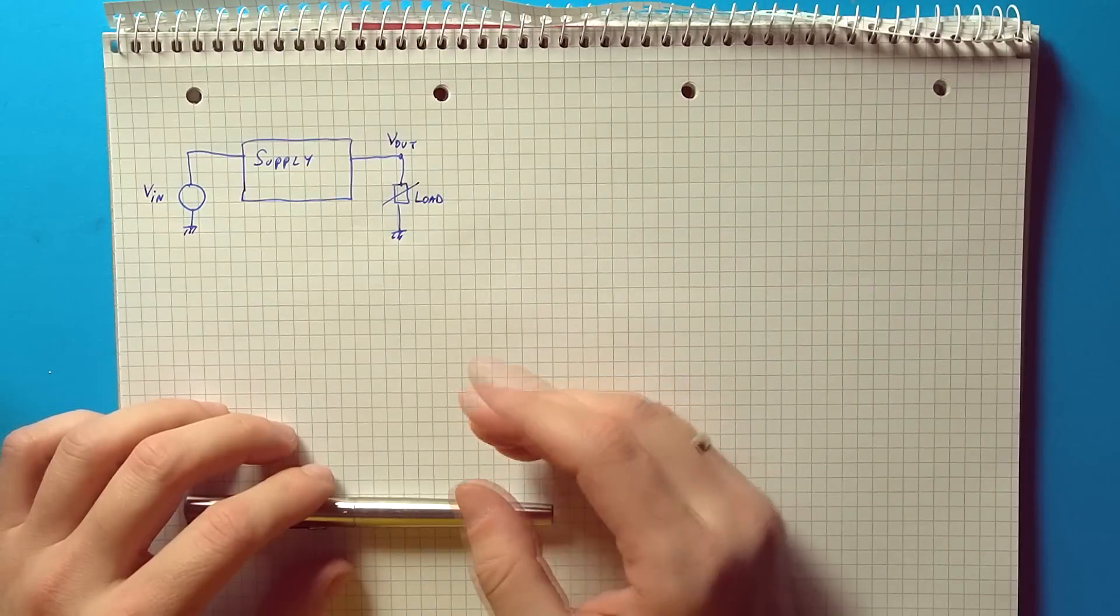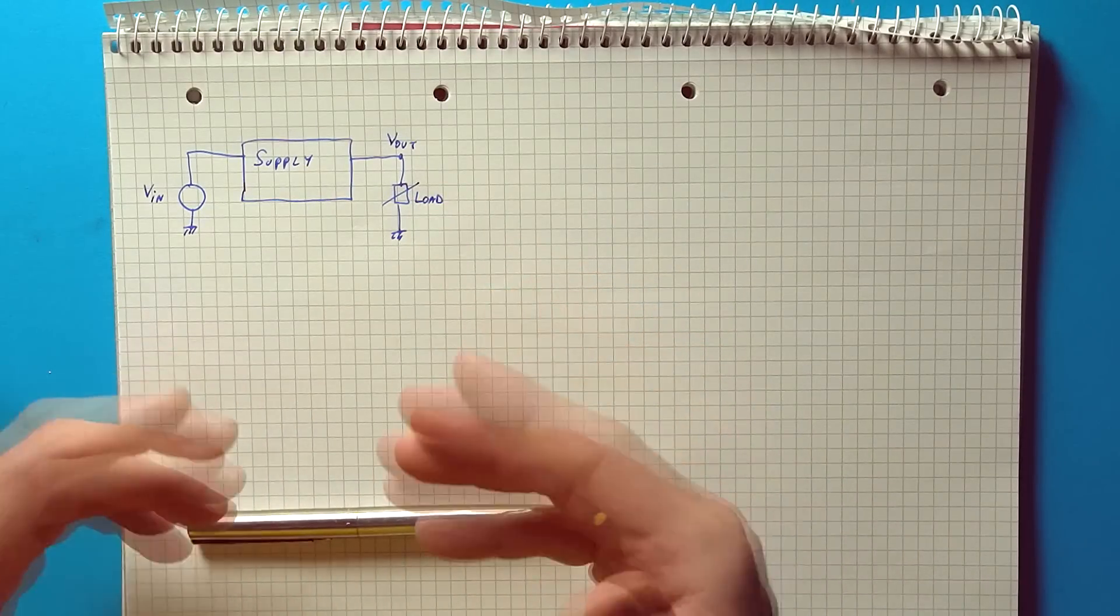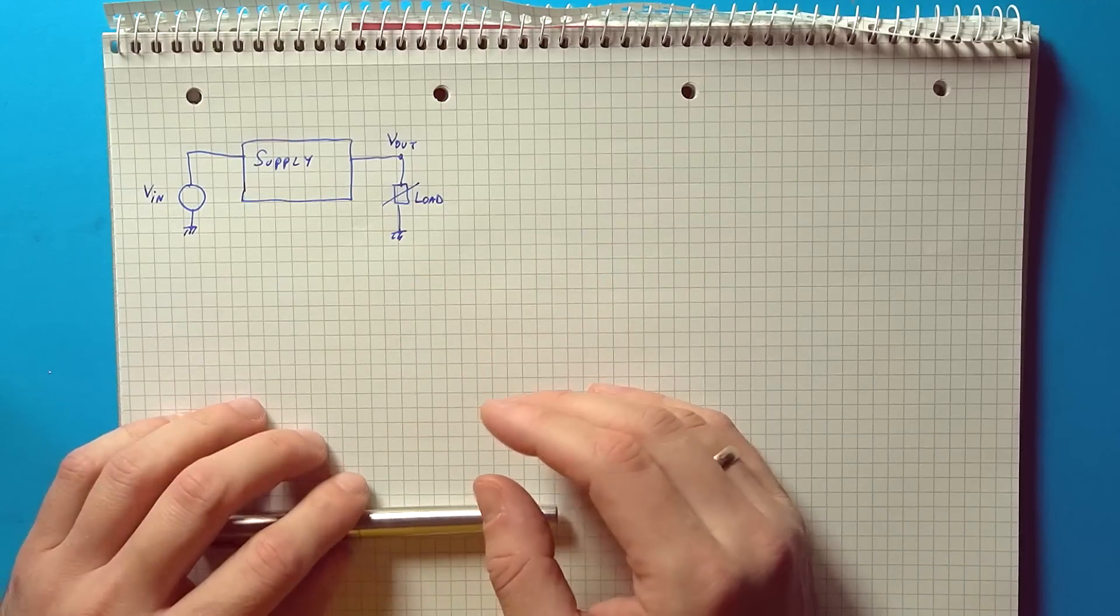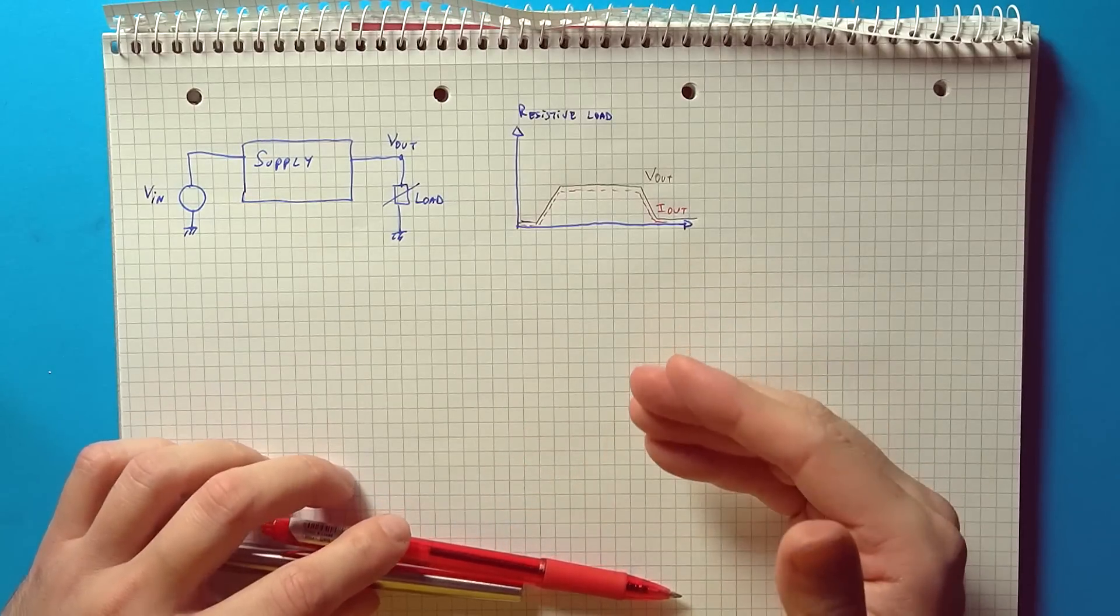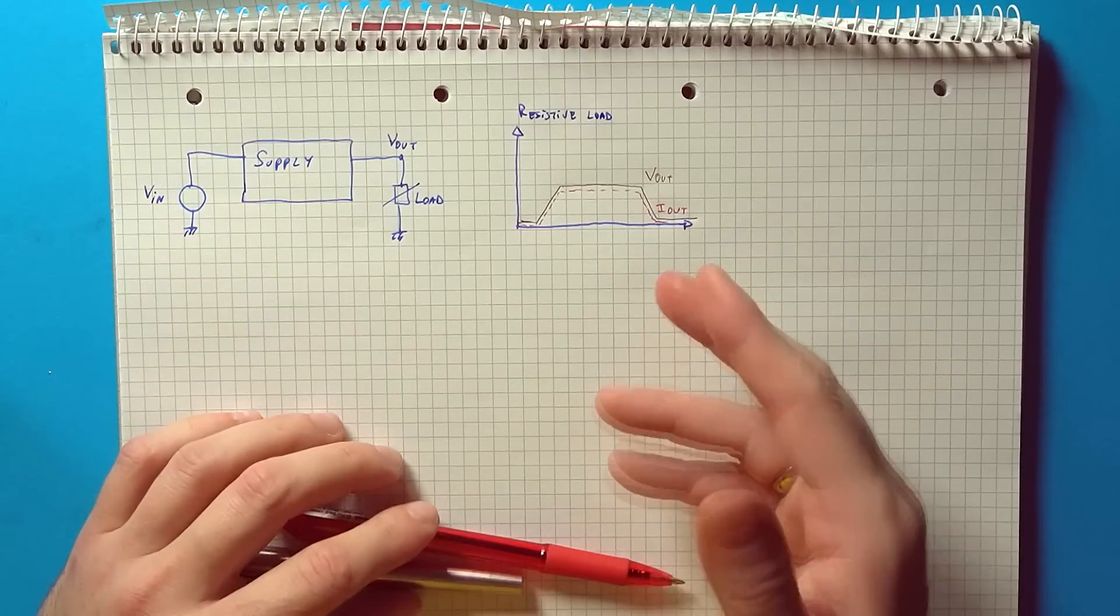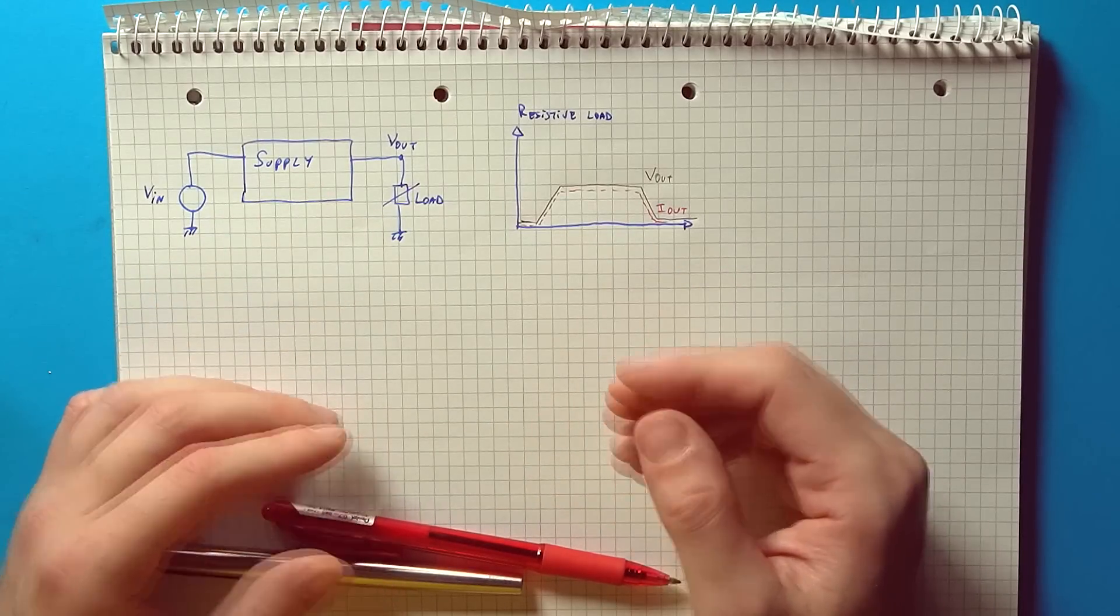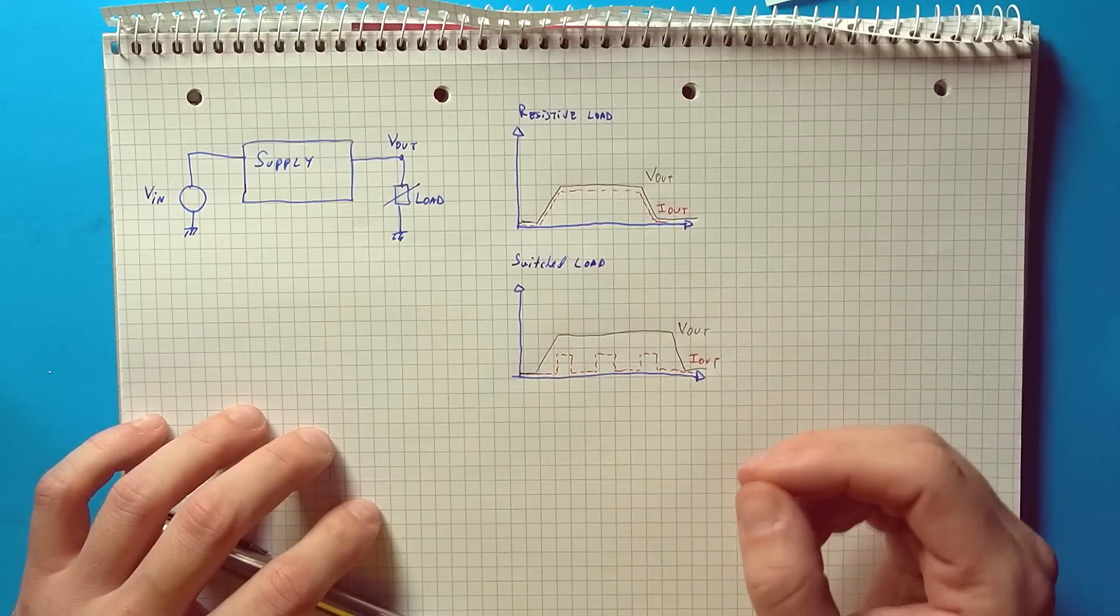Moving on to load regulation, this refers to changes in the output load current. Depending on the type of load and the way it's connected to the supply the current draw will be more or less consistent. So one extreme case is a perfectly resistive load connected directly to the output. Once there is voltage there will be a current. The next is a switched load.